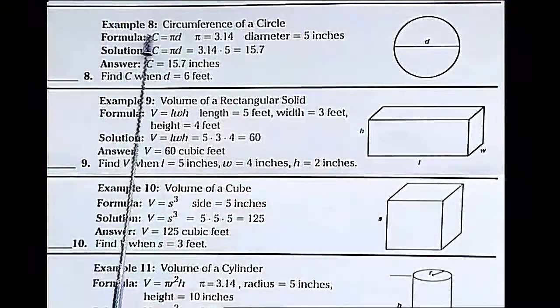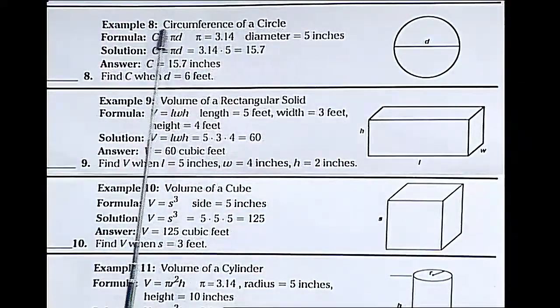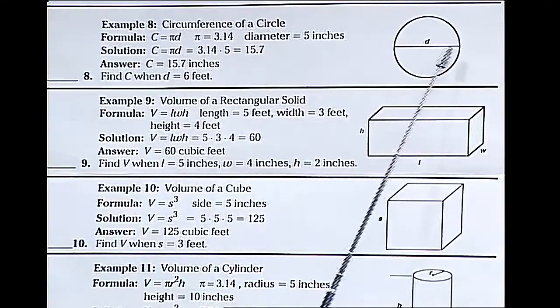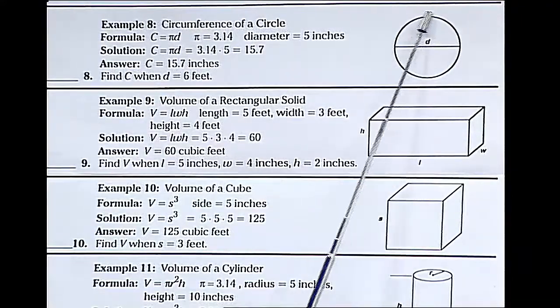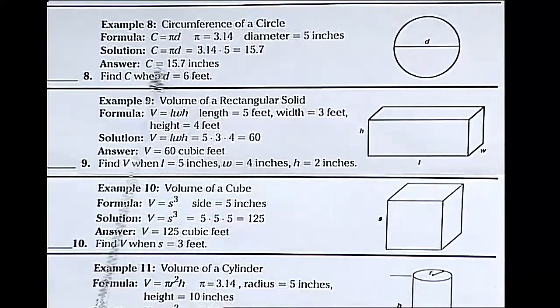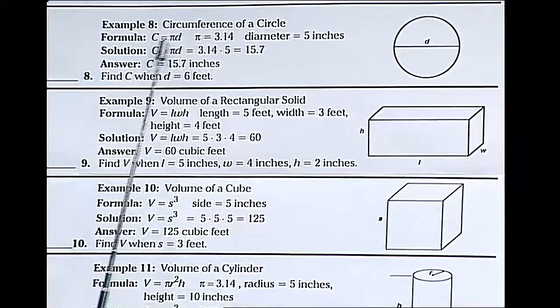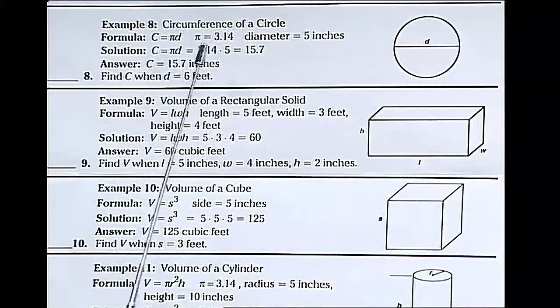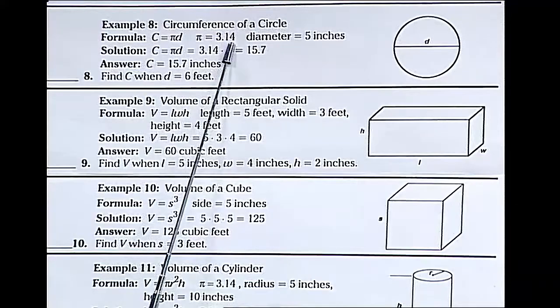Example 8 has the circumference of a circle. Circumference is a fancy word for perimeter of a circle, or the distance around. To find circumference, we multiply pi times the diameter. Pi is equal to 3.14.